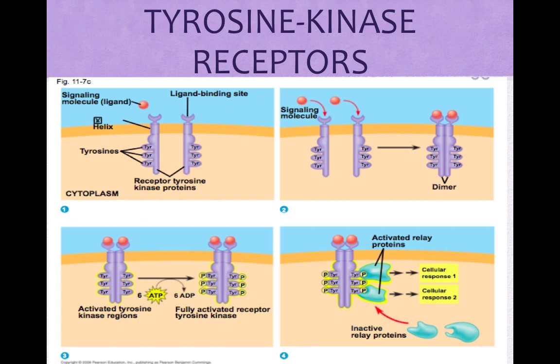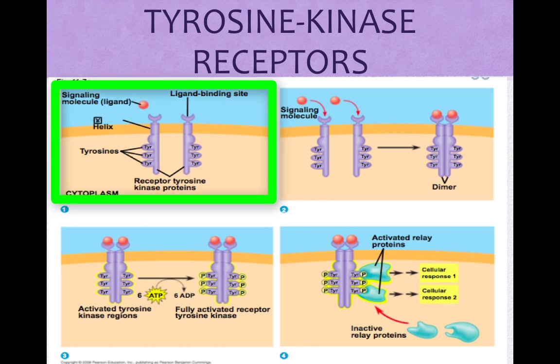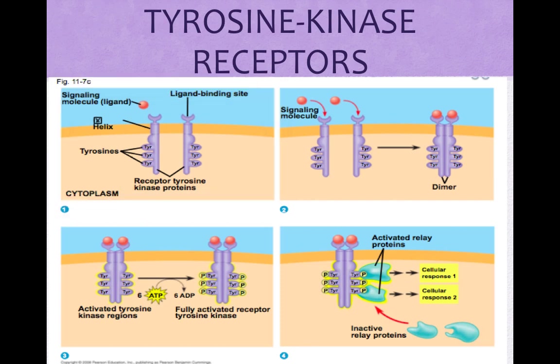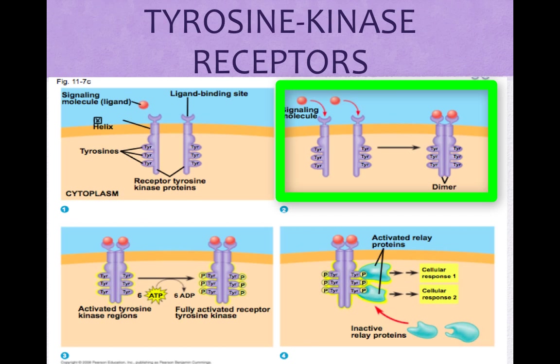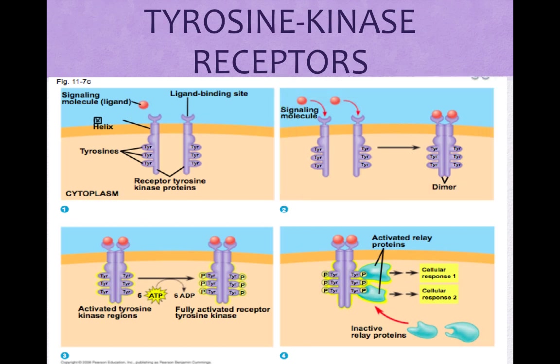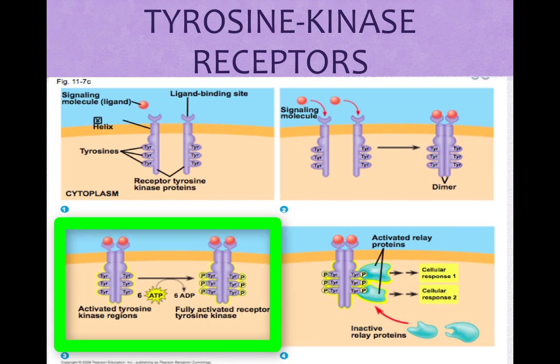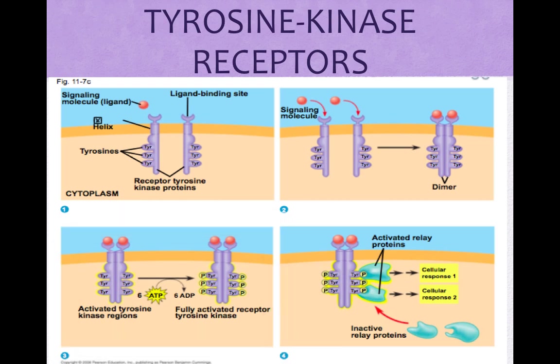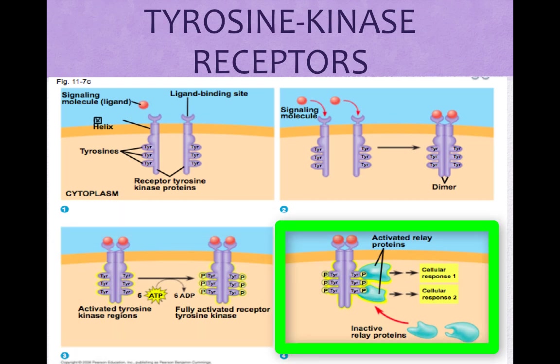Tyrosine kinase receptors are used when the cell needs to regulate and coordinate many activities at once. Growth factors, which regulate cell growth and reproduction, often bind to tyrosine kinase receptors. The cytoplasmic side of the TK receptor acts as an enzyme that helps transfer a phosphate from ATP to tyrosine, which is an amino acid. The receptor is activated in two steps. First, ligand binding causes two receptor polypeptides to form a dimer — a protein made of two polypeptides. Second, this activates the TKs, which add a phosphate to the tyrosines. The receptor protein is now fully activated, specific proteins bond to it, many transduction pathways are activated, and cellular responses occur.